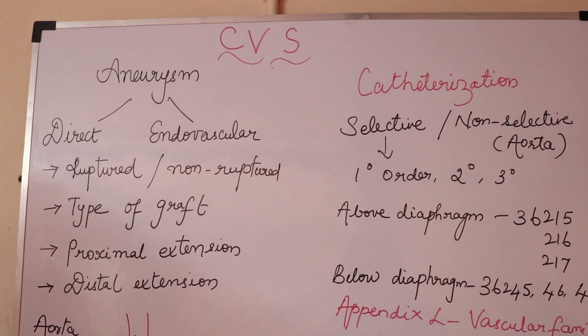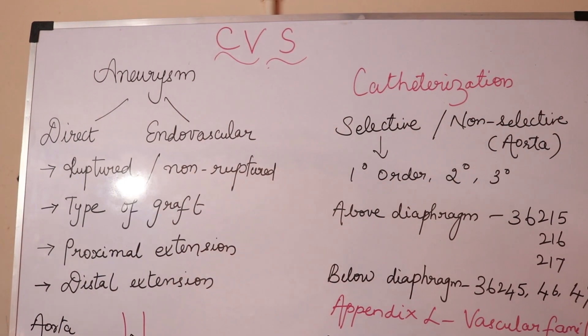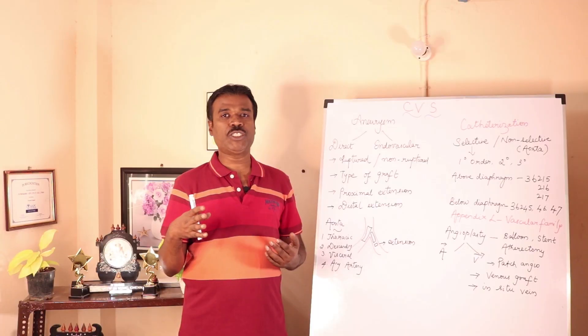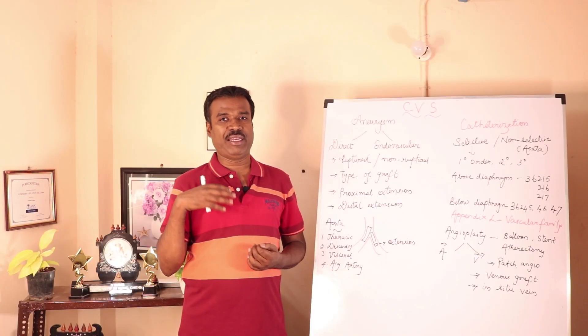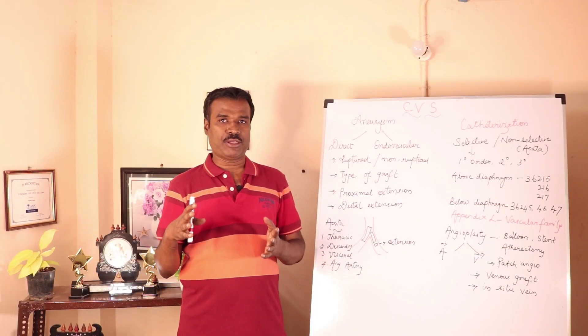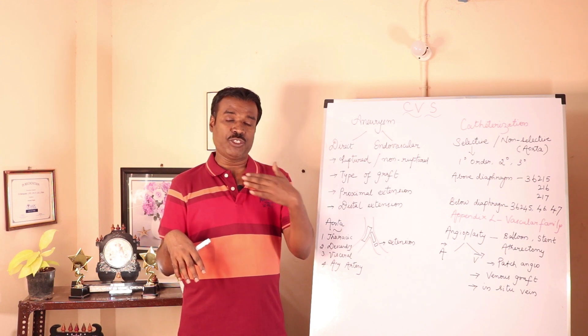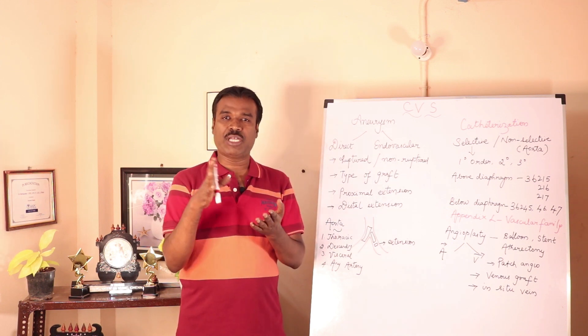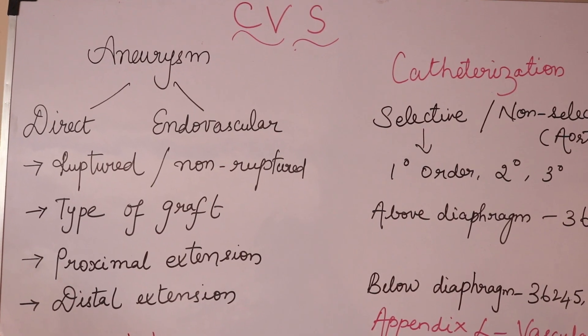Next, the very common procedure that is being done is angioplasty. Angio means blood vessel, plasty means repair. Angioplasty can be done as a patch angioplasty, which is a direct repair of the ruptured blood vessel.